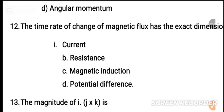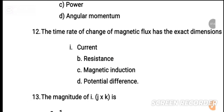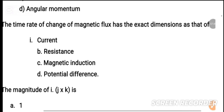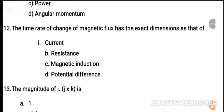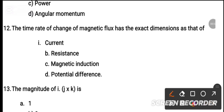MCQ number 12: The time rate of change of magnetic flux has the same dimension as — dash. If you take the time rate of change of magnetic flux, it has the exact same dimension as potential difference. The correct option is potential difference.